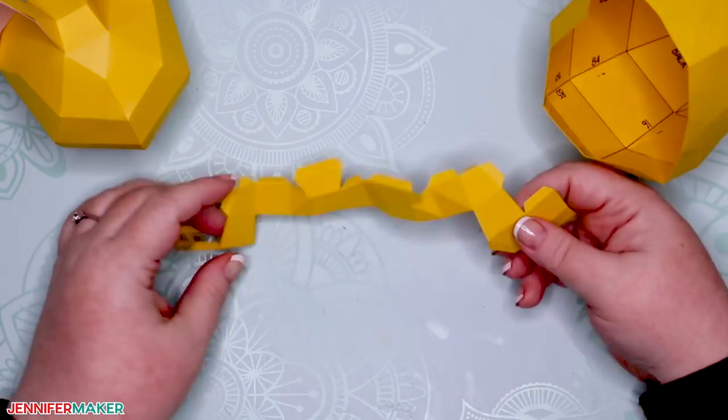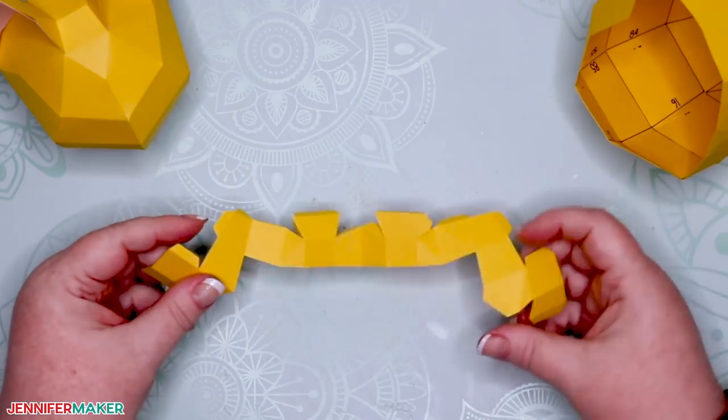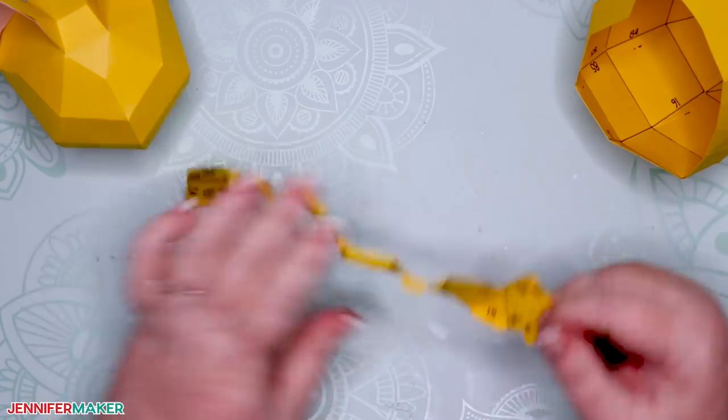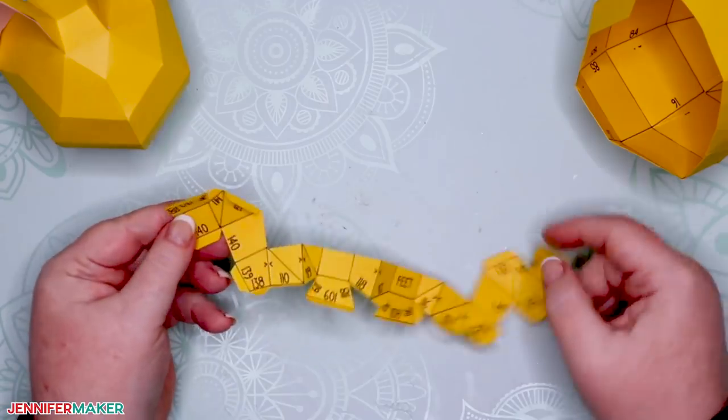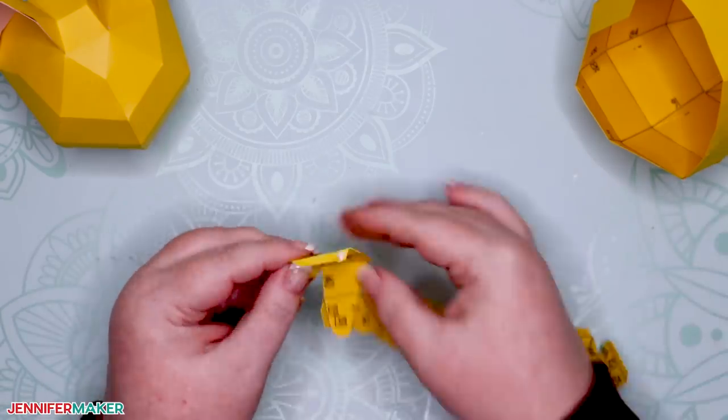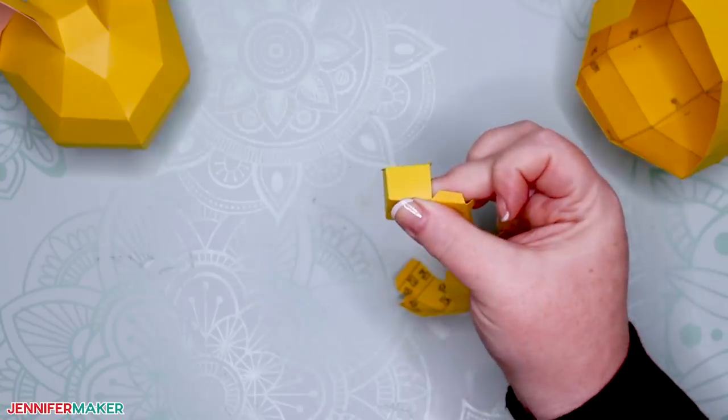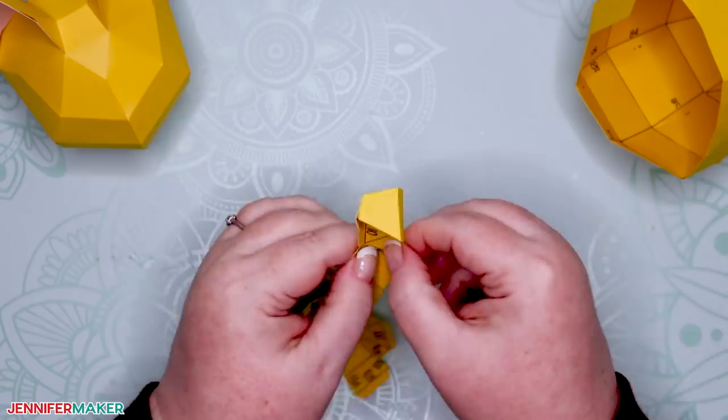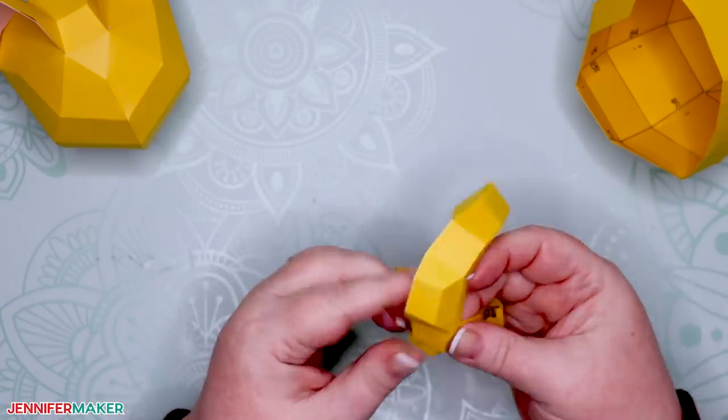Now it's time to put the feet together. Little cute little kitty feet. The feet are really like little boxes, one box for each paw. And if you match numbers, everything goes together properly.